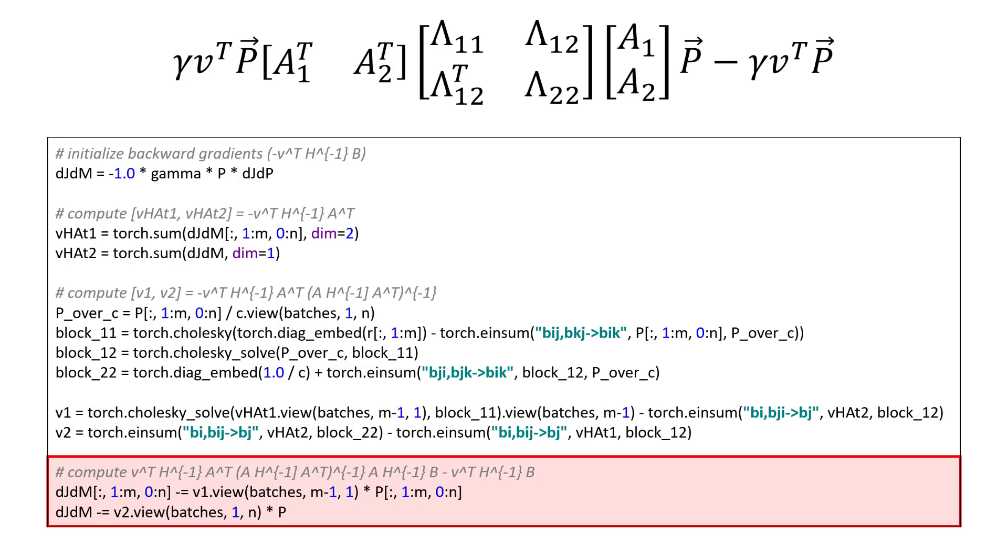Finally, we post multiply by A p and subtract from our initial calculation of gamma v transpose p to get the exact backward going derivative of the loss function with respect to the input.